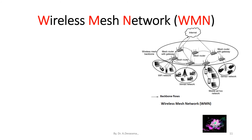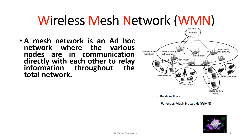Wireless mesh network: A mesh network is an ad hoc network where the various nodes are in communication directly with each other to relay information throughout the total network. The devices connected to this network form a wireless mesh, and depending upon the mobility pattern, the nature of devices, and inter-device distance, the topology varies.